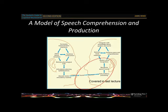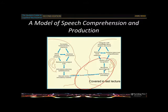We discussed how when you hear a spoken word it's revealed to you bit by bit over time, and what you do is map that onto your store of known words. As soon as you hear a sound you activate all your words beginning with that sound — this is the cohort model. We also talked about retrieving word meanings, and that the arrows go back the other way as well: if you're expecting a word like 'dollars' and then get an incorrect sound, you know it's wrong without having to hear the rest of the word.